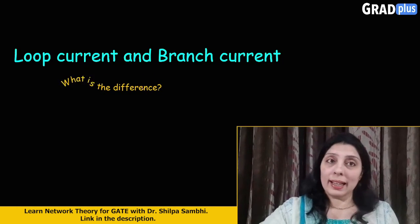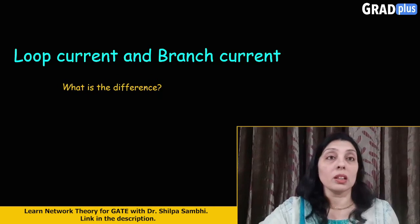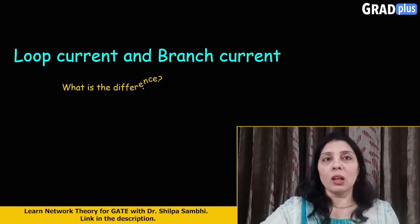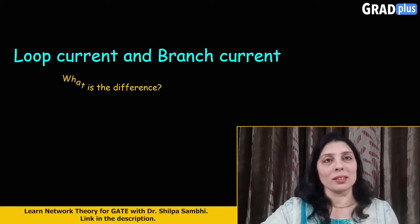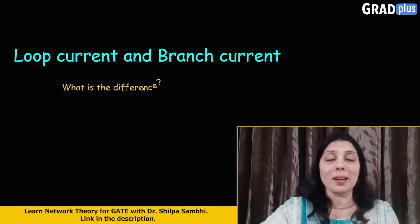When we solve any electrical circuit using mesh analysis or Kirchhoff's voltage law, we often use the terms loop current and branch current. So do you know what is the difference between a loop current and a branch current?